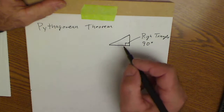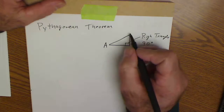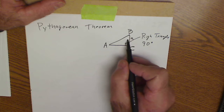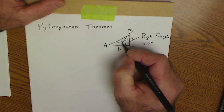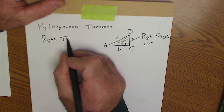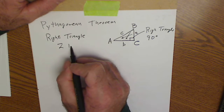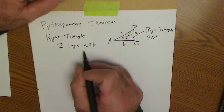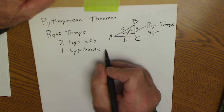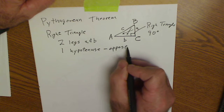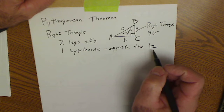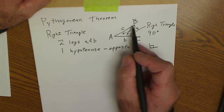Just a couple of things about triangles. You use a capital letter for the measure of an angle, and a lowercase letter for the length of the side opposite that angle. So if this is side A, it is opposite angle A; this is side B, opposite angle B; and this is side C. In every right triangle there are two legs — in this case A and B — and it's common to use A and B for the legs. Then there's one hypotenuse, and the hypotenuse is always opposite the right angle. It's common to call that right angle C, with the hypotenuse lowercase c.